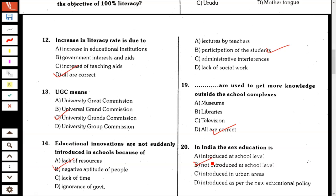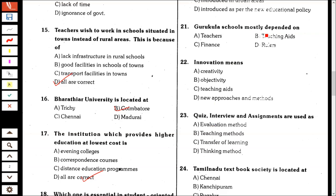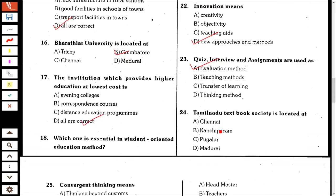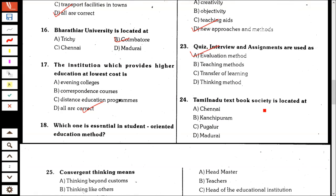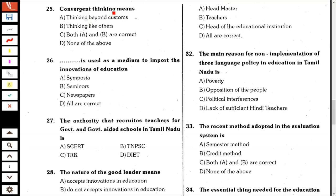Gurukula schools mostly depended on teachers. Innovation means new approaches and methods. Quiz, interview, and assignments are used as evaluation methods. Terminal Textbook Society is located at Chennai. Convergent thinking means thinking like others. A medium used to impart the dimensions of education — education is all are correct: symposia, seminar, newspaper.